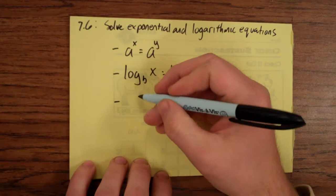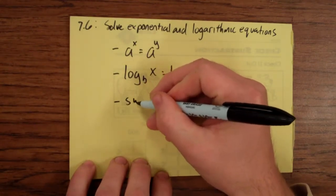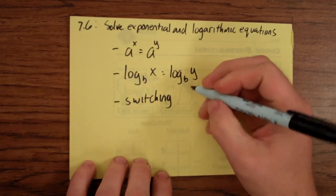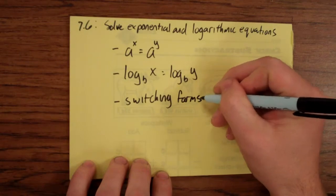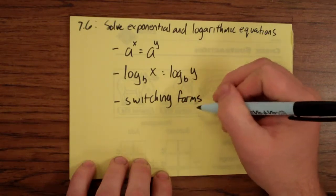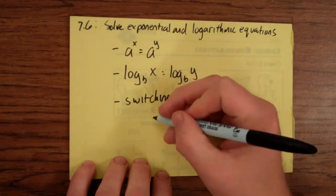And the other is the form, or the kind of equation where you're going to be switching forms. And what I mean by forms is, and we've talked about this in previous sections, exponential and logarithmic form.